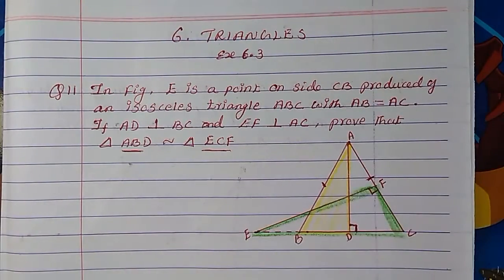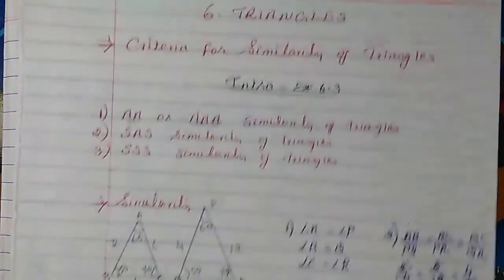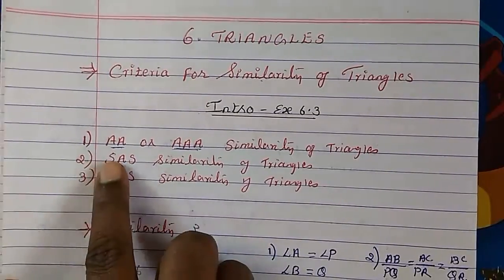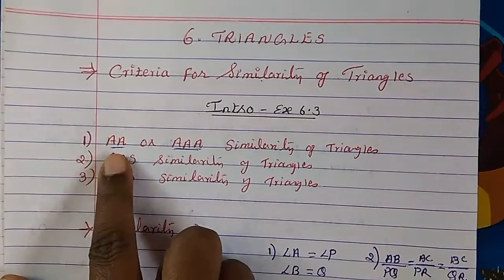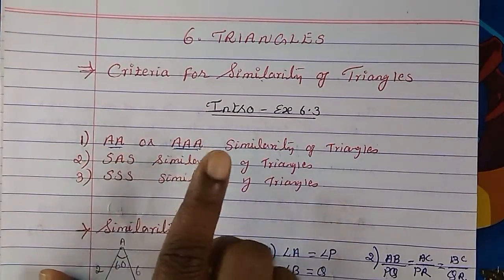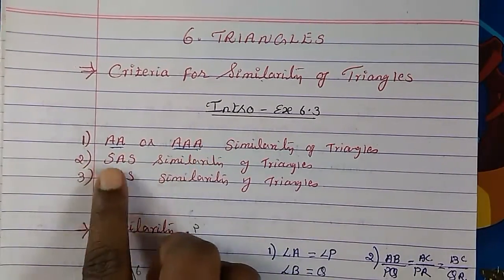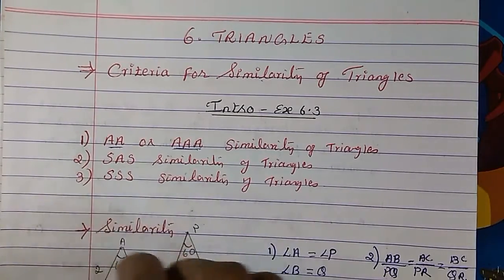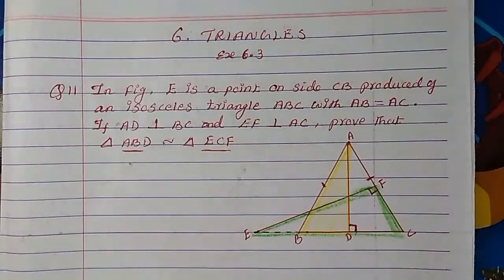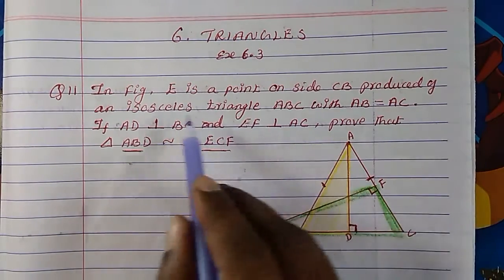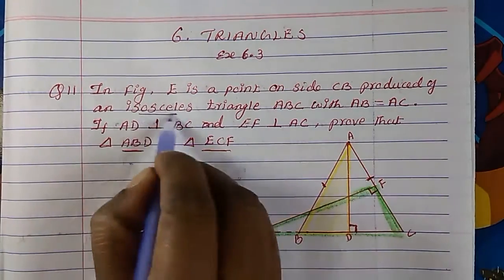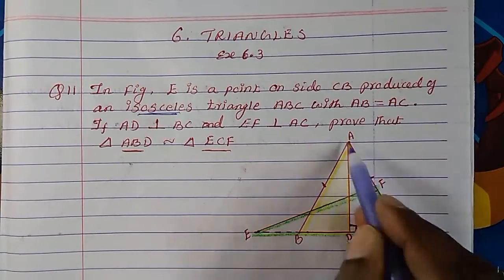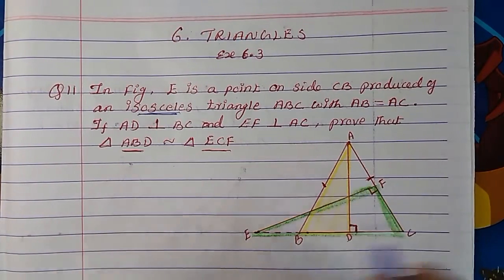For similarity, the criteria we have: we can prove if two angles are equal then we can say they are similar, or side-angle-side, or triple S. Any of these criteria we have to find out. First of all, what is given to us? ABC is an isosceles triangle.